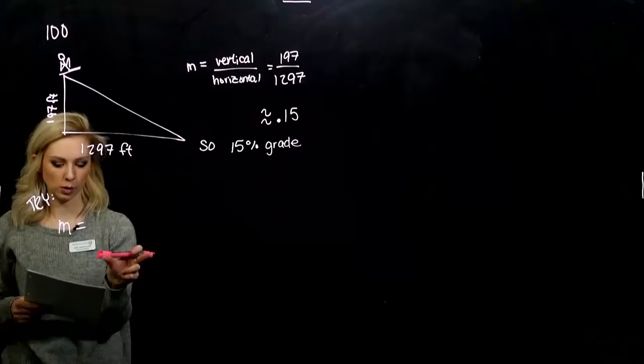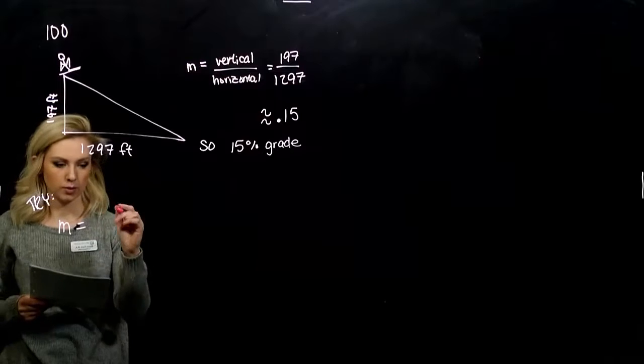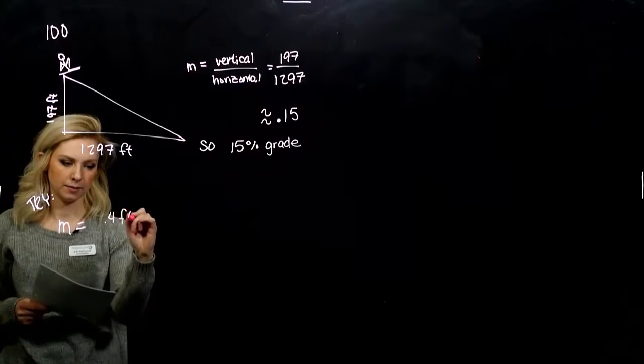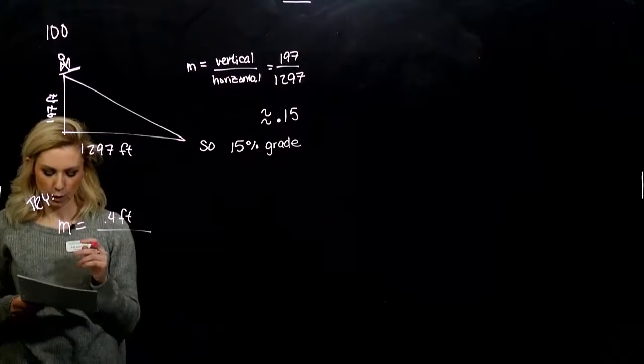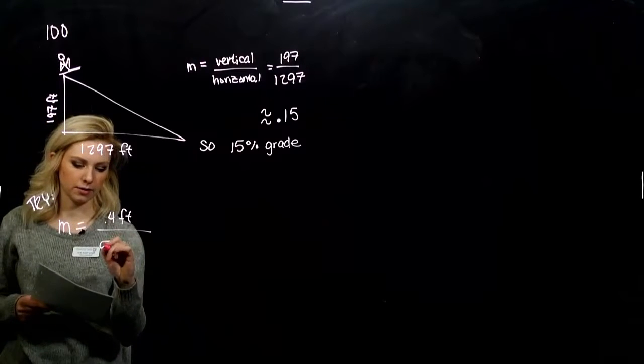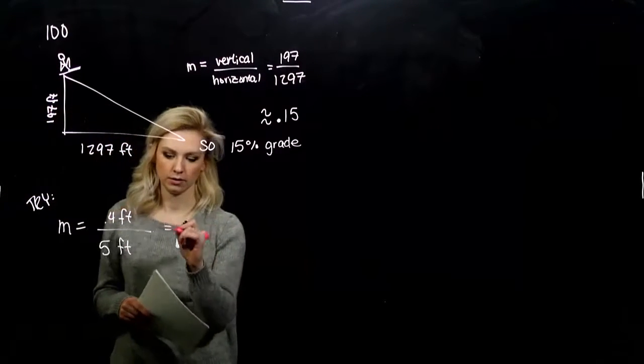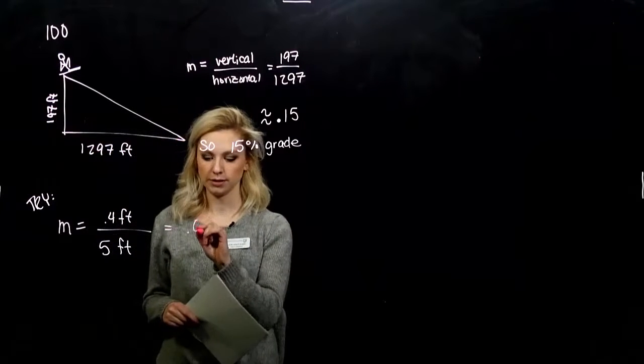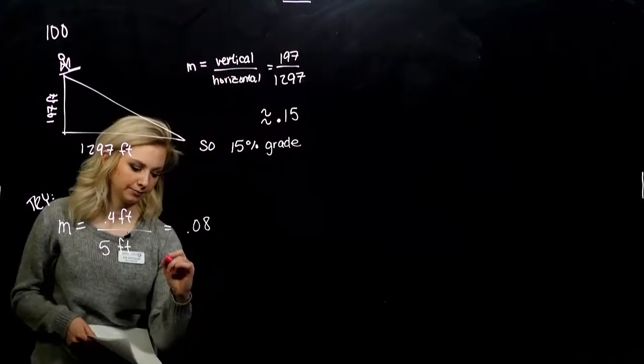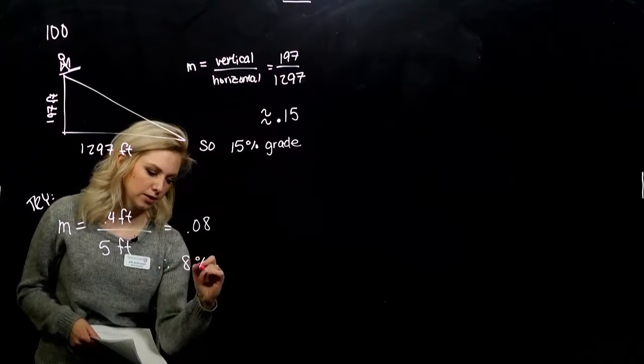Again, vertical over horizontal. So vertically, we are at 0.4 feet. Horizontally, the length of the treadmill is 5 feet. If you do the division, what are you looking at? 0.08. So what percent grade? 8%.